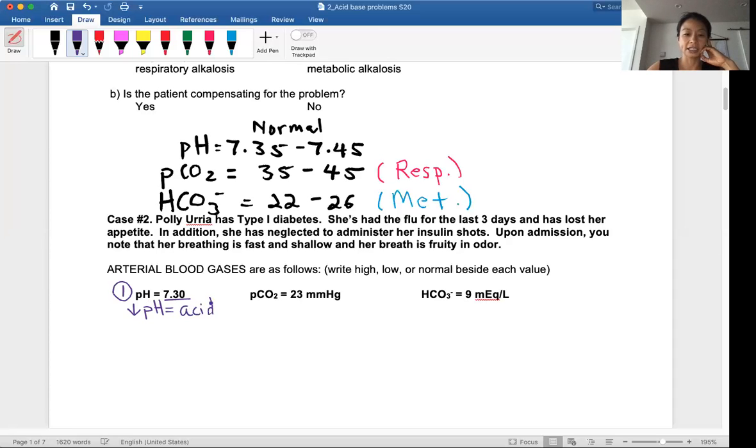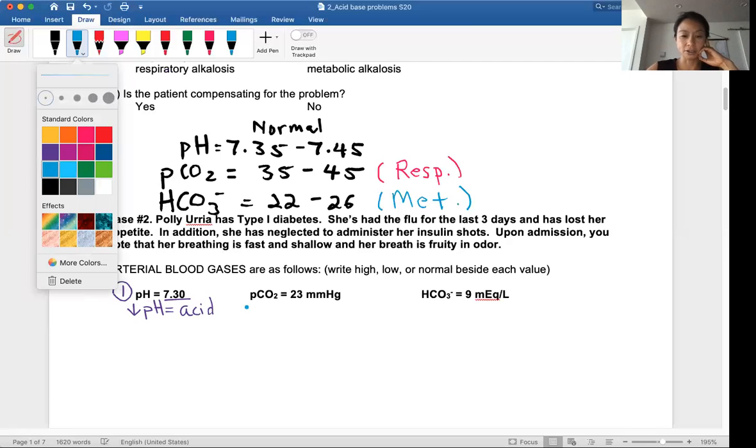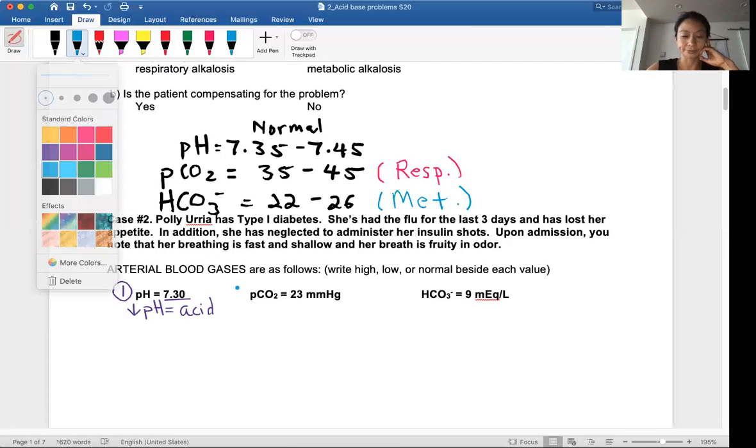Step two, we'll look at the pCO2 and see what that says. pCO2 in this case is low, so low pCO2 equals high pH. Respiratory is opposite, so low pCO2 means high pH or alkalosis.